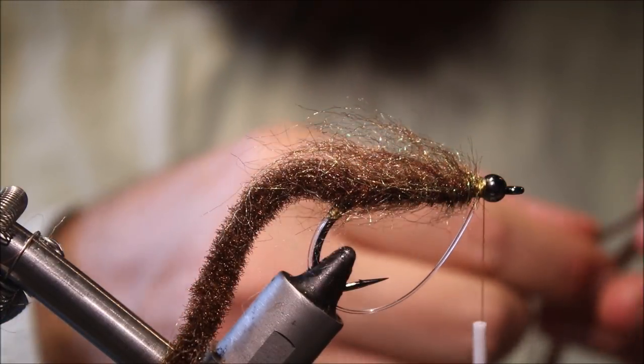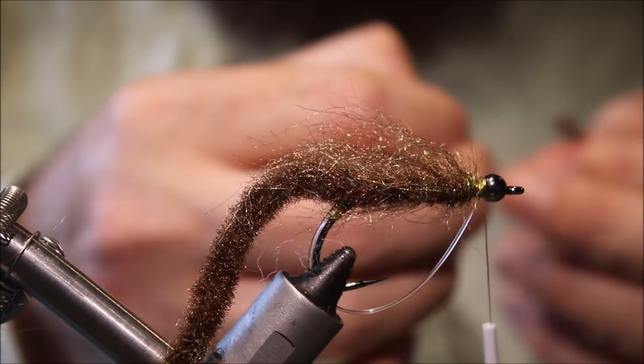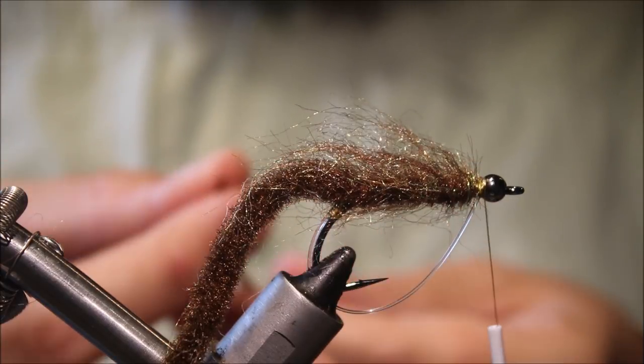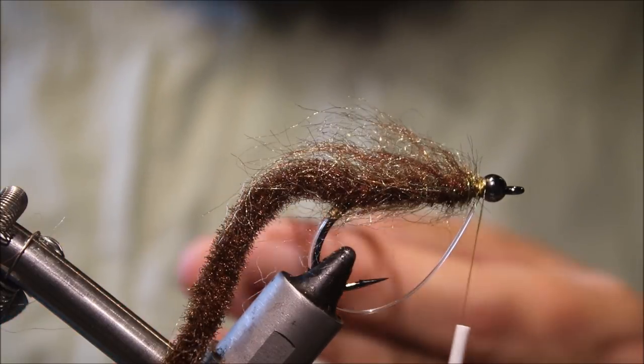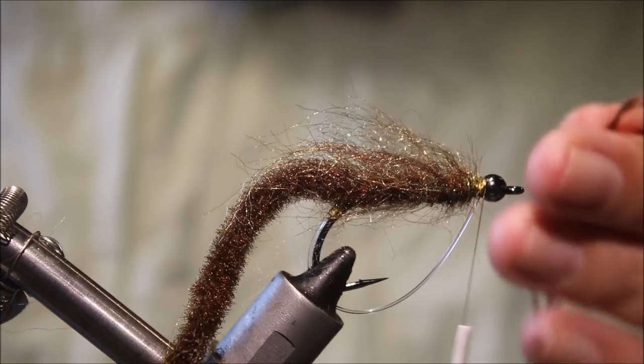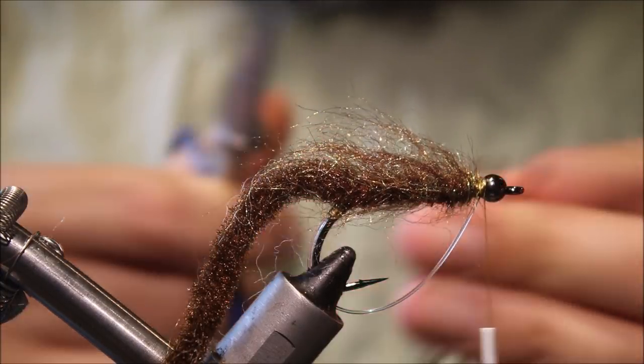And we're ready to tie in the legs. So, I like the silly legs for this, but you can use whatever you want. Spinnerbait skirts are good, or jig skirts if you go to the bass shop. They've got some nice mixed colors. I'm just using brown with a copper flake here, but again, whatever you prefer.